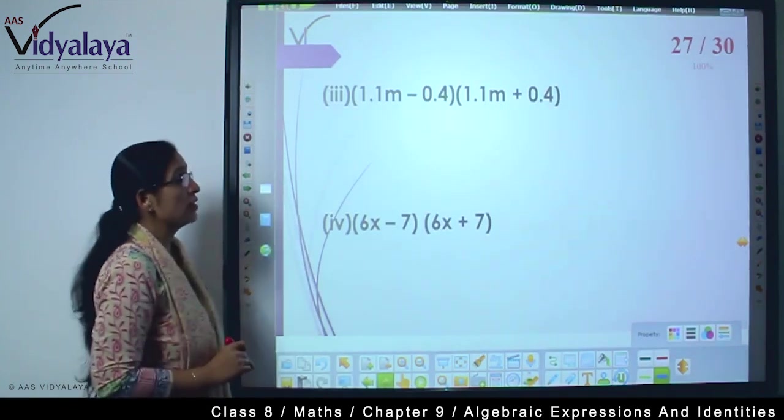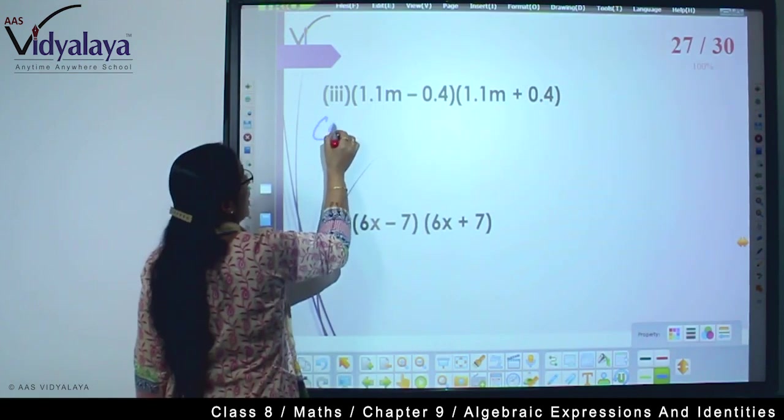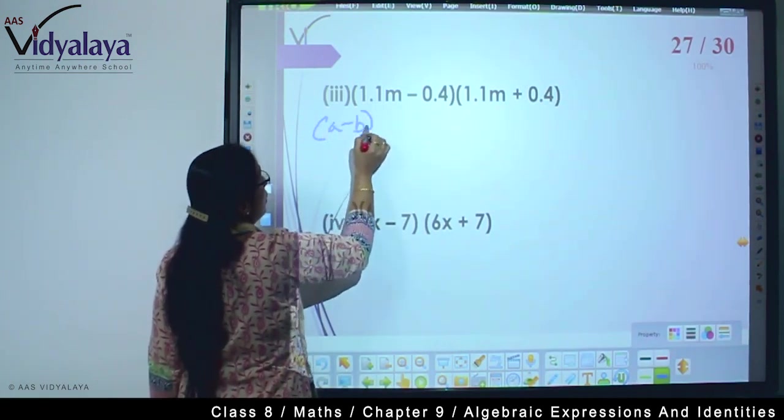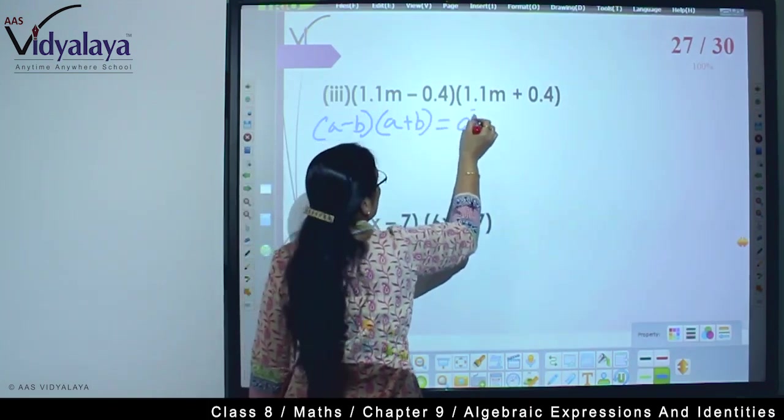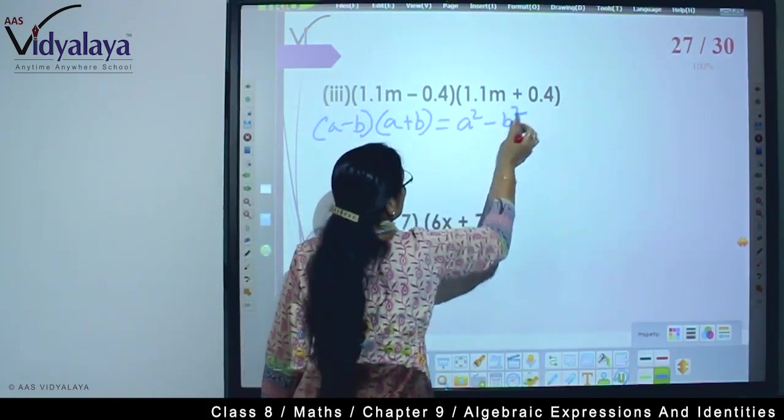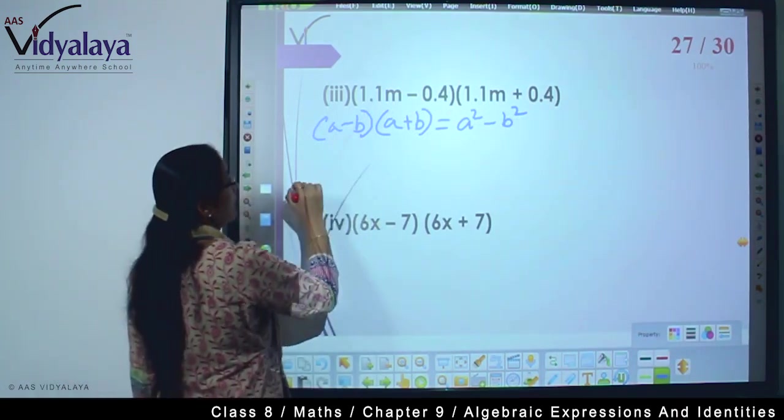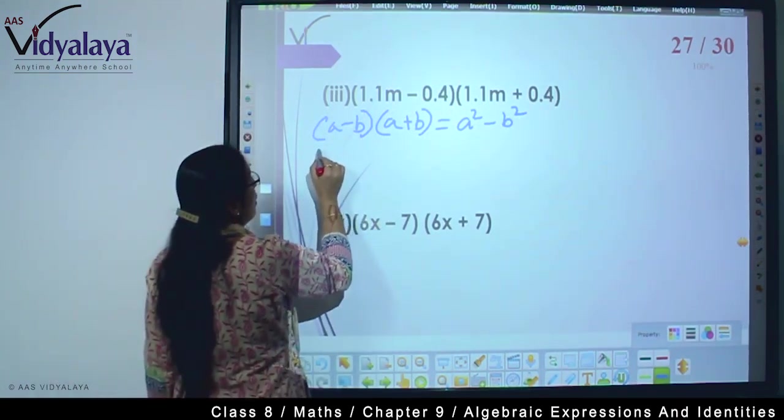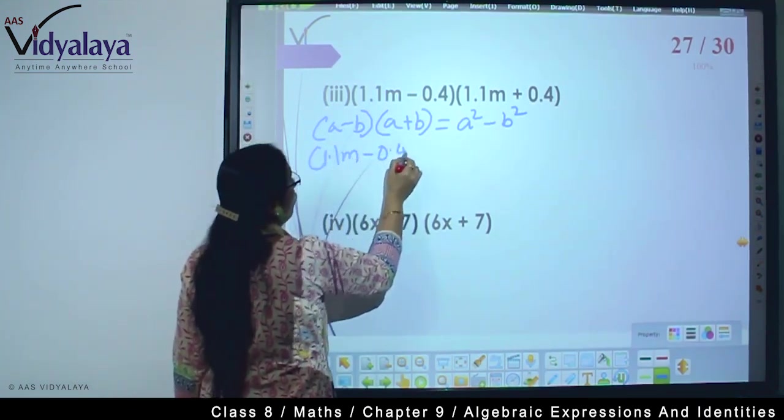Next, you see this - which identity is it? This is (a-b)(a+b) is equal to a² - b². Clear? So this means we have (1.1m - 0.4)(1.1m + 0.4).